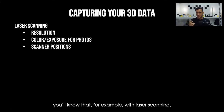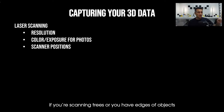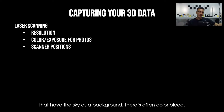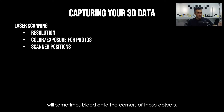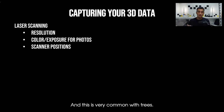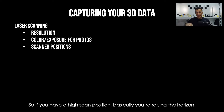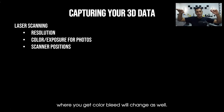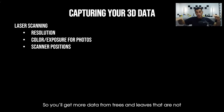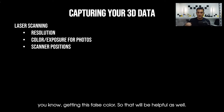The second benefit of a higher scan position is related to color bleed. With laser scanning, if you're scanning trees or objects that have the sky as a background, the gray or blue sky will sometimes bleed onto the corners of these objects — this is very common with trees. By having a high scan position you're raising the horizon, so the higher you go, the position where you get color bleed will change. You'll get more data from trees and leaves that aren't receiving this false color.